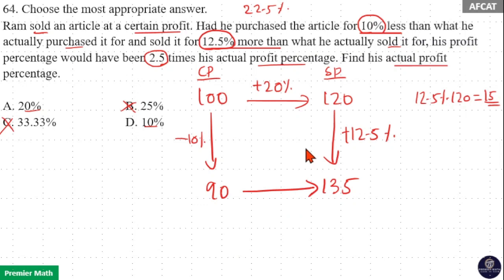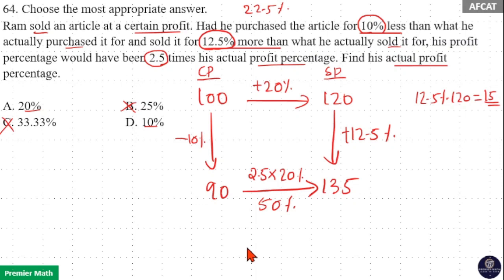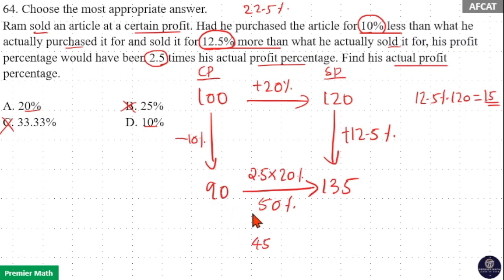If he purchased it for 10 percent less and sold it for 12.5 percent more, the profit will be 2.5 times the original profit. 2.5 into 20 is 50 percent. Let's check: if he purchases for 90 and sells for 135, the difference is 45 rupees. 50 percent of the cost price 90 is 45, so the profit is indeed 50 percent. Option A is the right answer.